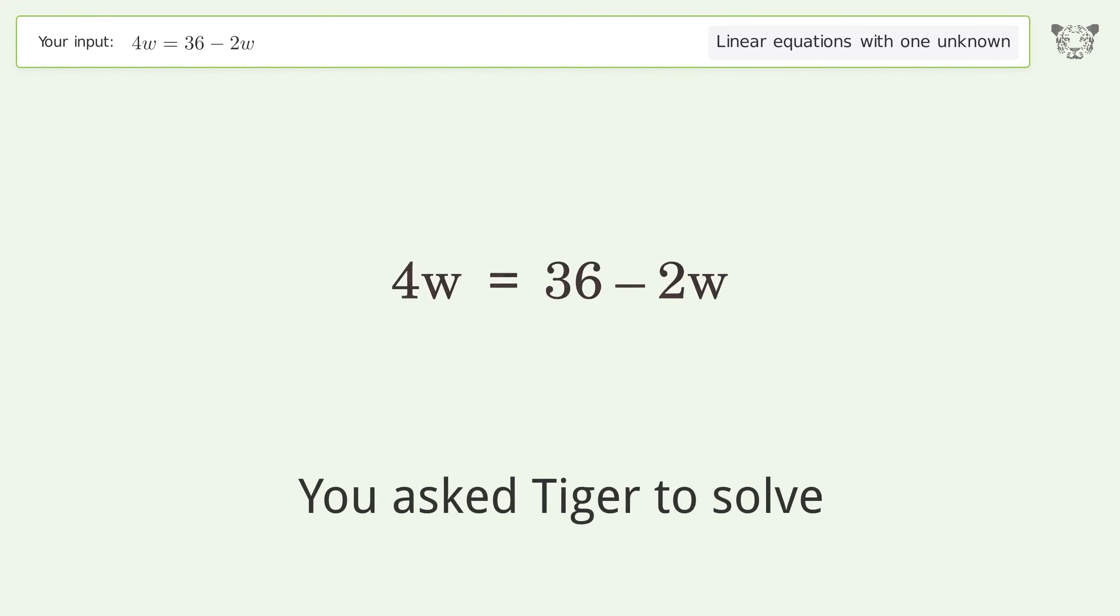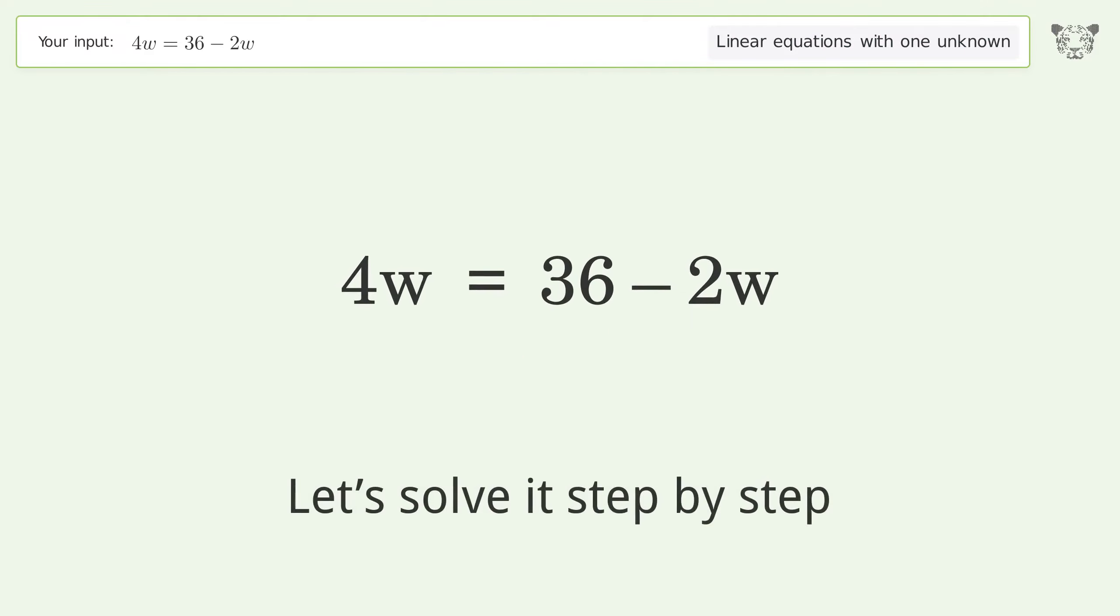You asked Tiger to solve. This deals with linear equations with one unknown. The final result is w equals 6. Let's solve it step by step.